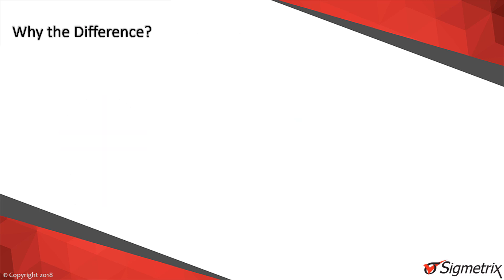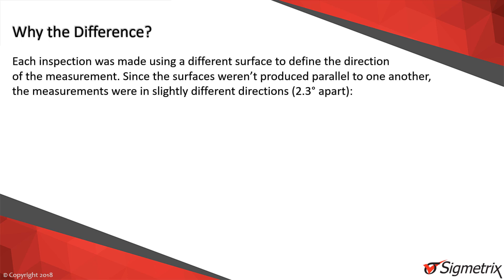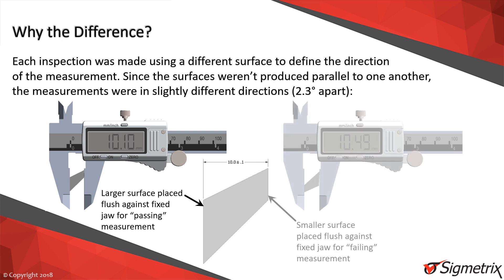Why did the two inspectors come to completely opposing conclusions on whether the part complies with the drawing? Who was correct? The problem is caused by both inspectors using a different reference for measurement, and hence measuring in slightly different directions. Though only 2.3 degrees apart, this slight difference leads to completely opposing conclusions about what to do with the part.